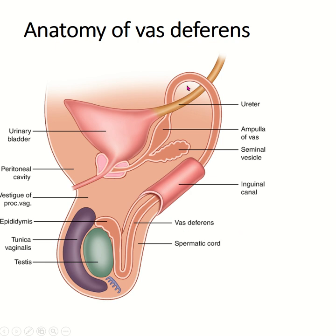The vas deferens is 30 to 35 cm in length. Within the scrotum, there is the testis and epididymis. The vas deferens starts from the tail of the epididymis, then it passes through the inguinal canal and enters the abdominal cavity.